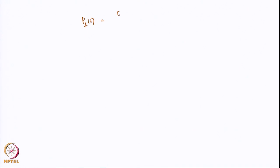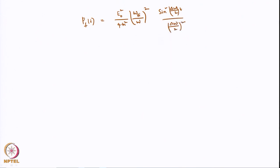Hello, welcome to lecture number 18 of the course Quantum Mechanics and Molecular Spectroscopy. In the last class, we looked at the transient probability to a state f from state i, given by E₀² π / (4ℏ² ω_fi² / ω²) · sin²(Δω/2 · t) / (Δω/2)² · |⟨f|ε̂·μ|i⟩|², and we know this is the transition moment integral.